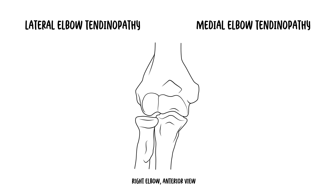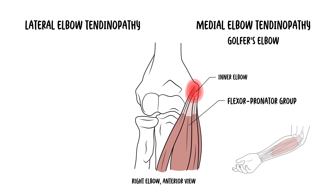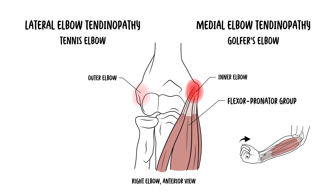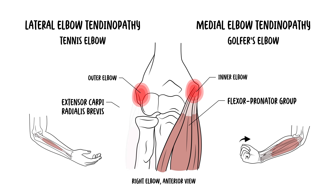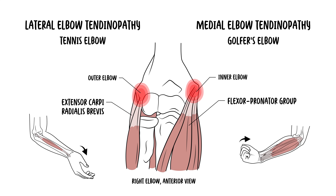What's the difference between medial and lateral elbow tendinopathy? Medial elbow tendinopathy, or golfer's elbow, affects the inner elbow and is associated with the flexor pronator muscle group, leading to pain exacerbated by movements such as wrist flexion and pronation. Conversely, lateral or outer elbow tendinopathy, known as tennis elbow, involves the extensor muscles — particularly the extensor carpi radialis brevis — with pain typically worsening with wrist extension and supination movements.